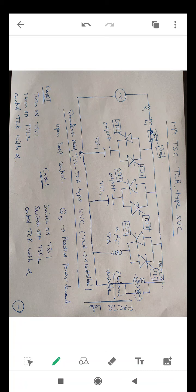Simulate in Simulink with two TSCs and one TCR separated into four parts with sequential switching — three operated as TSRs and one as TCR — and observe the THD content. Try to simulate and provide your feedback. If you don't get the results, you can interact through WhatsApp. Thank you.